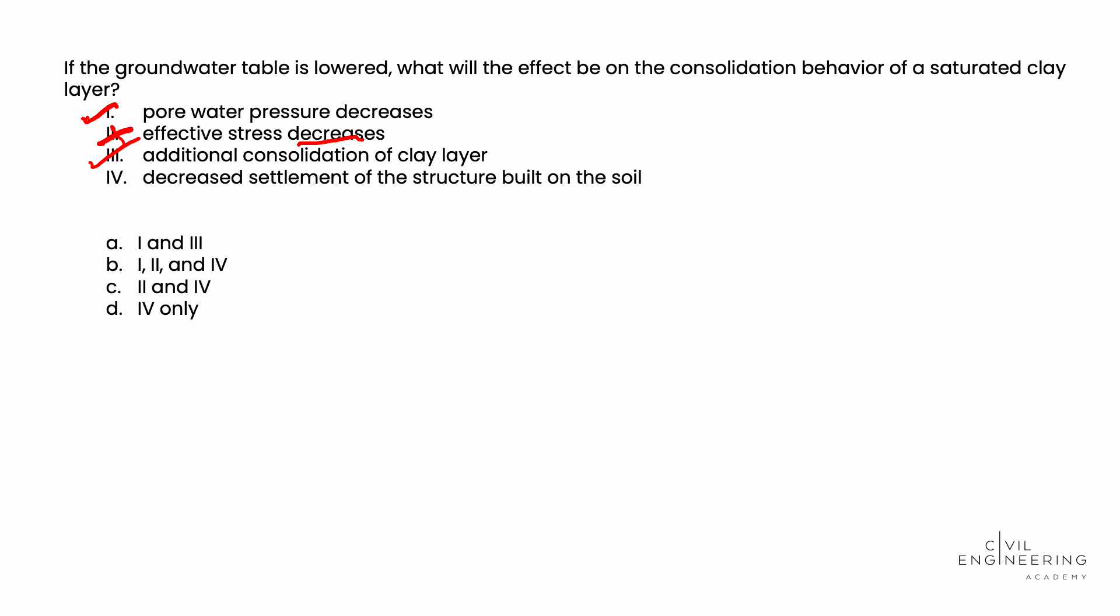And then finally, we see that the additional consolidation of the clay layer we just talked about causes an increased settlement of the structure that's built on this clay layer. But Roman numeral four says a decreased settlement. So because of that, Roman numeral four is incorrect.